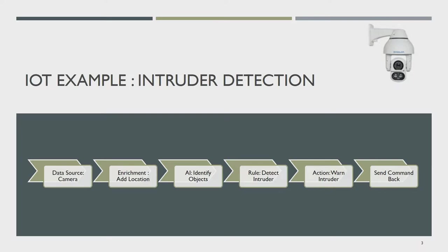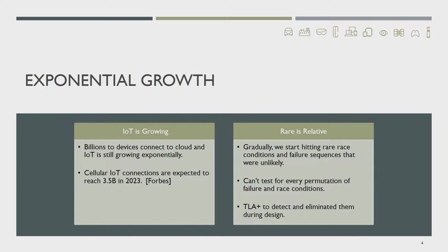Let me take a very simple example to explain how IoT works. A security camera captures an image and sends it to the cloud. Enrichment adds location detail for that image. An AI model identifies all objects in the image. A rule engine detects a foreign object as an intruder and decides to warn the intruder. The signal to issue the warning goes to the appropriate device through the same channel.